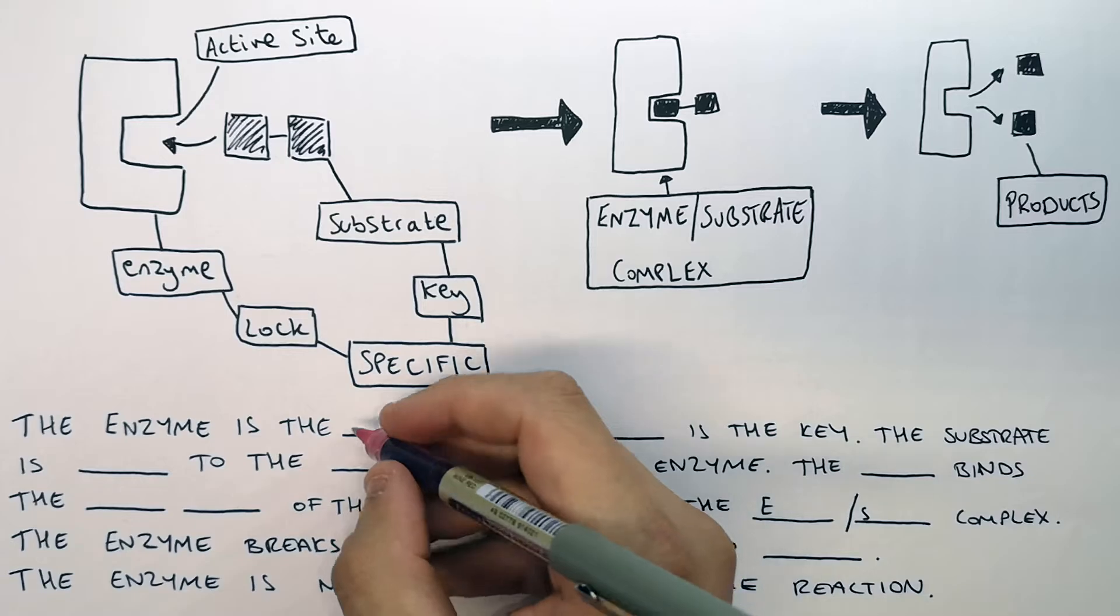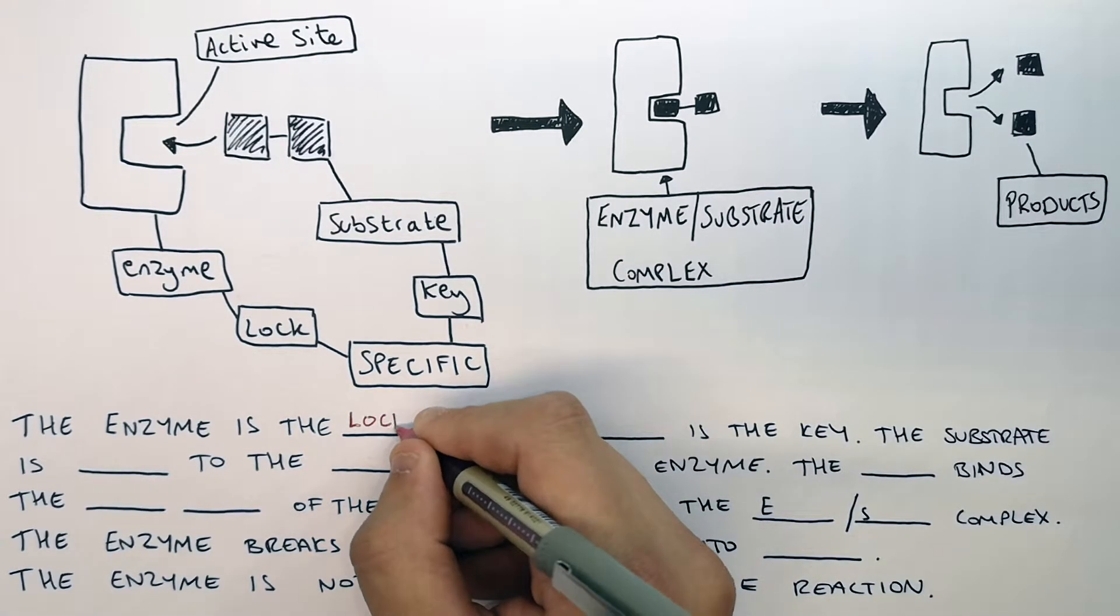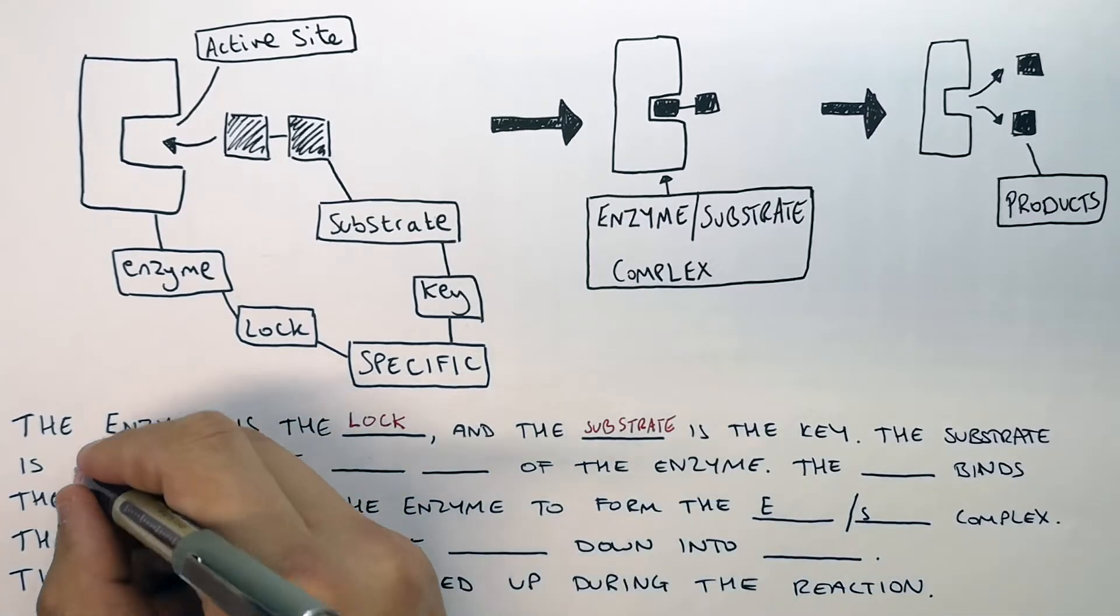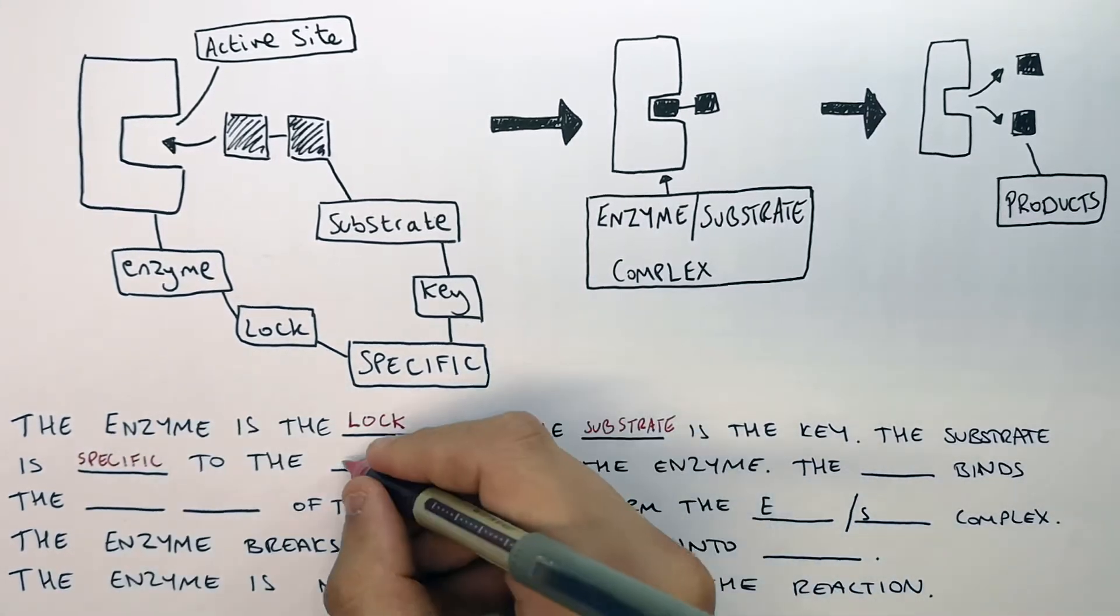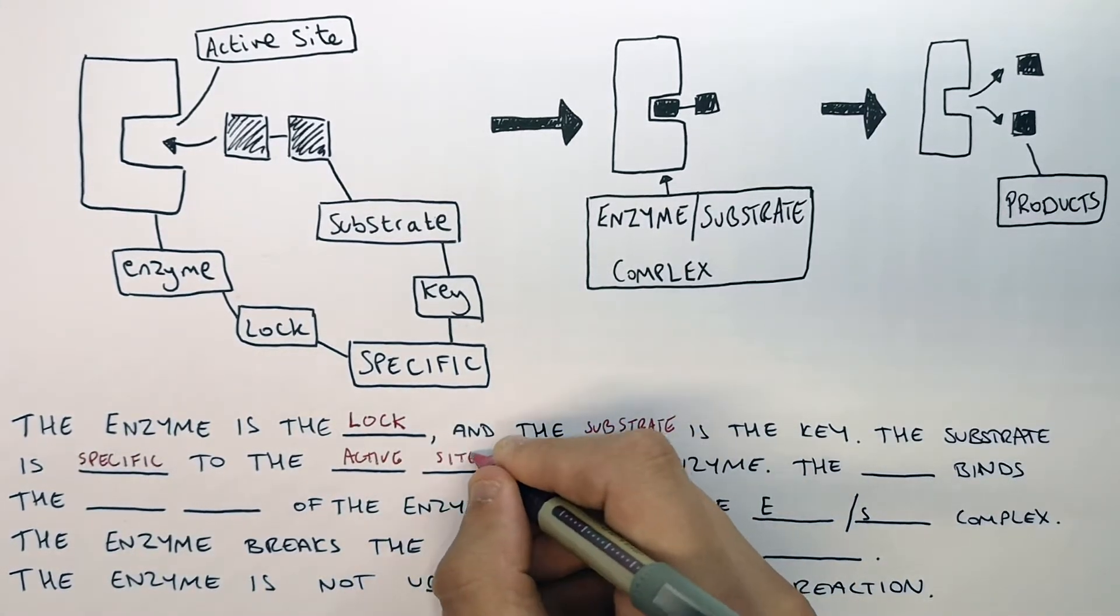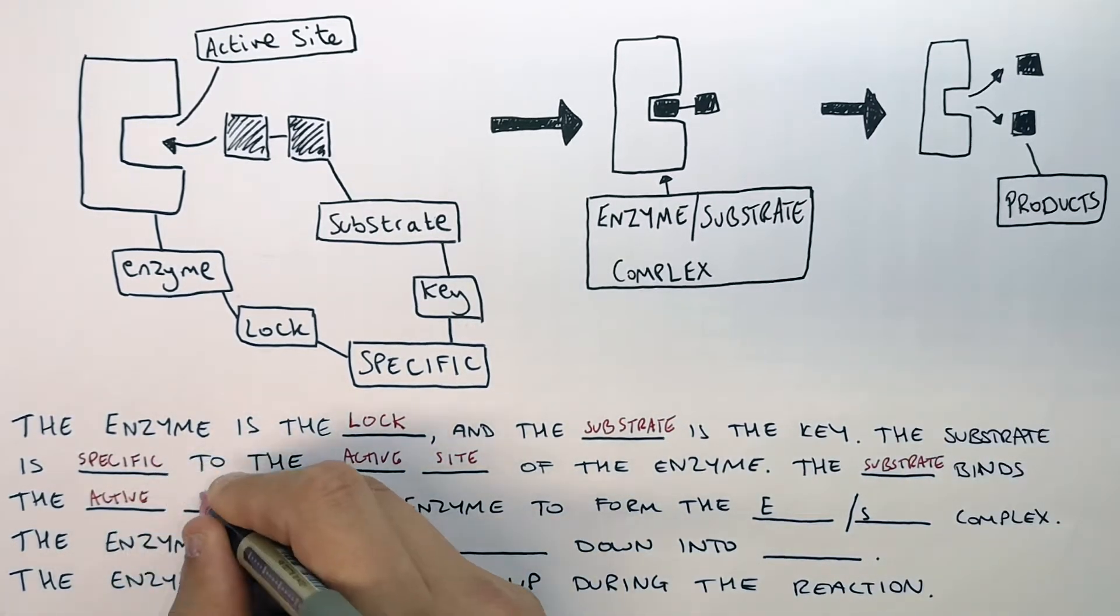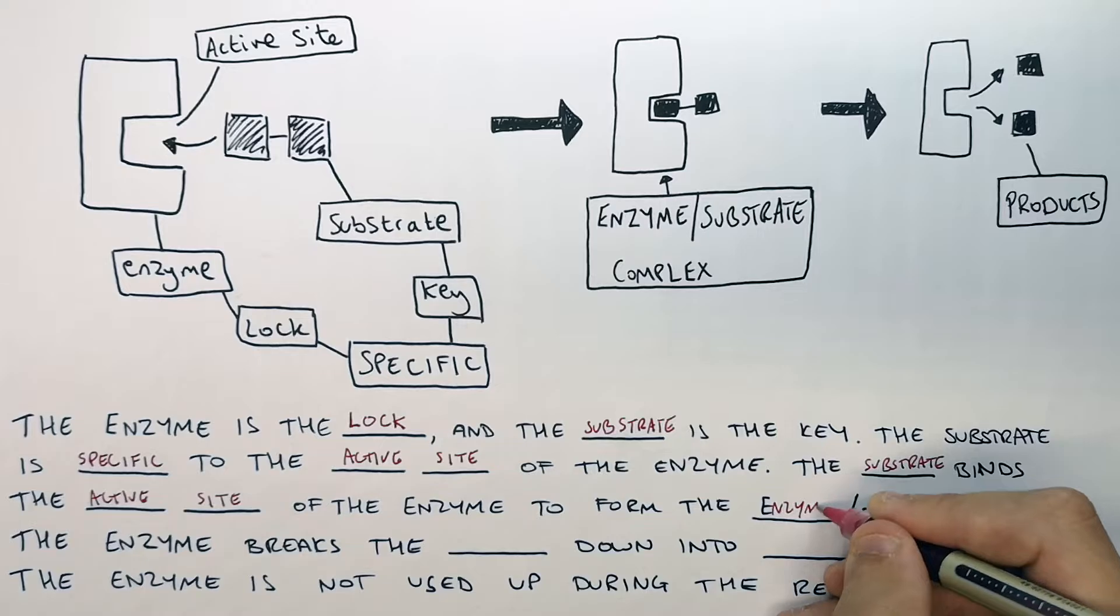The enzyme is the lock and the substrate is the key. The substrate is specific to the active site of the enzyme. The substrate binds the active site of the enzyme to form the enzyme-substrate complex.